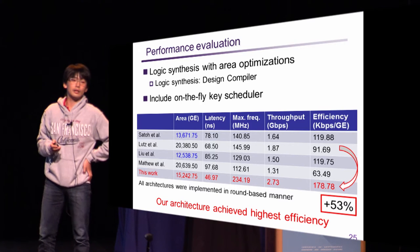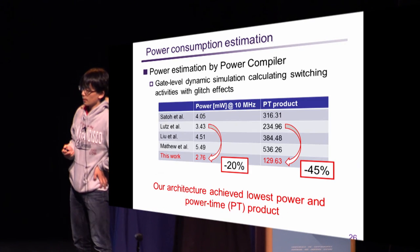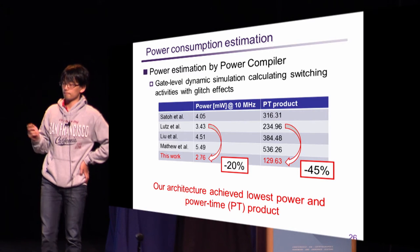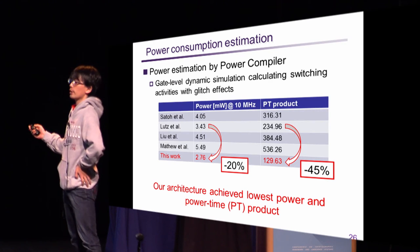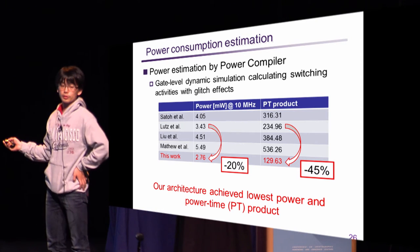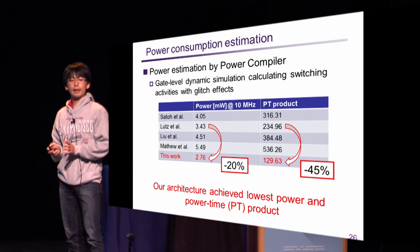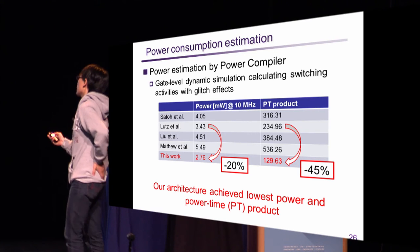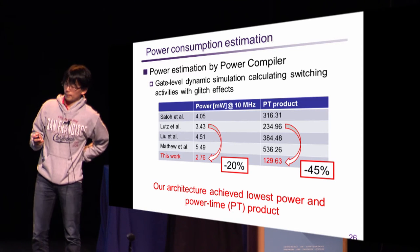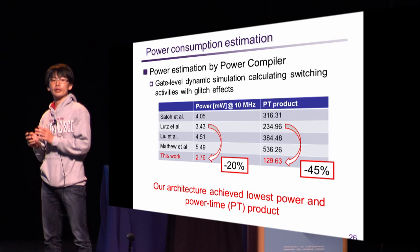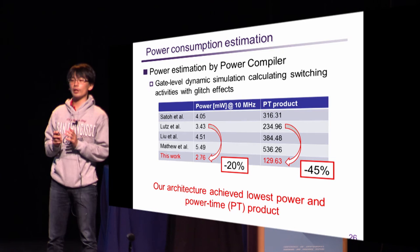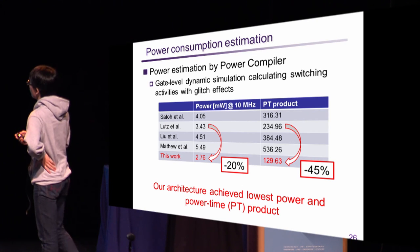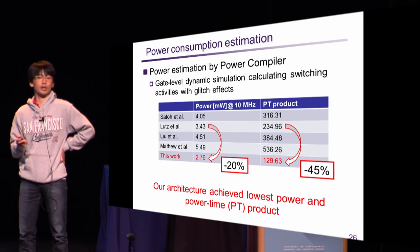In addition, we performed gate-level dynamic simulation to estimate power consumption of this architecture. This table shows estimated power consumption at 10 MHz and power-time product. Here, time indicates latency for one-block encryption. As you can see, our architecture has the smallest power and power-time product. Please note power-time product indicates energy for one-block encryption. Thus, we can confirm our architecture achieves lowest power and energy for encryption and decryption.